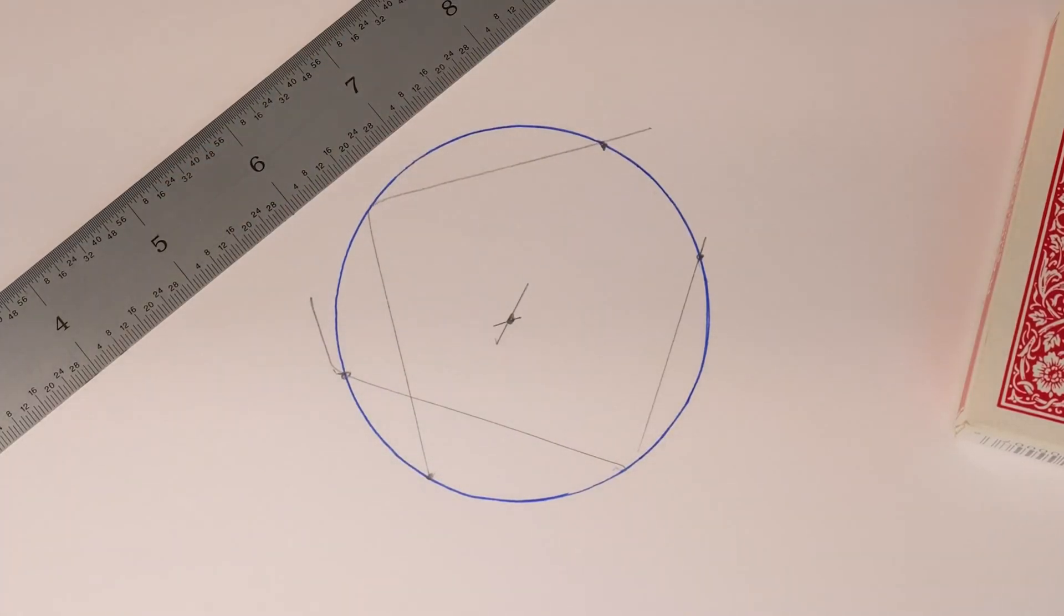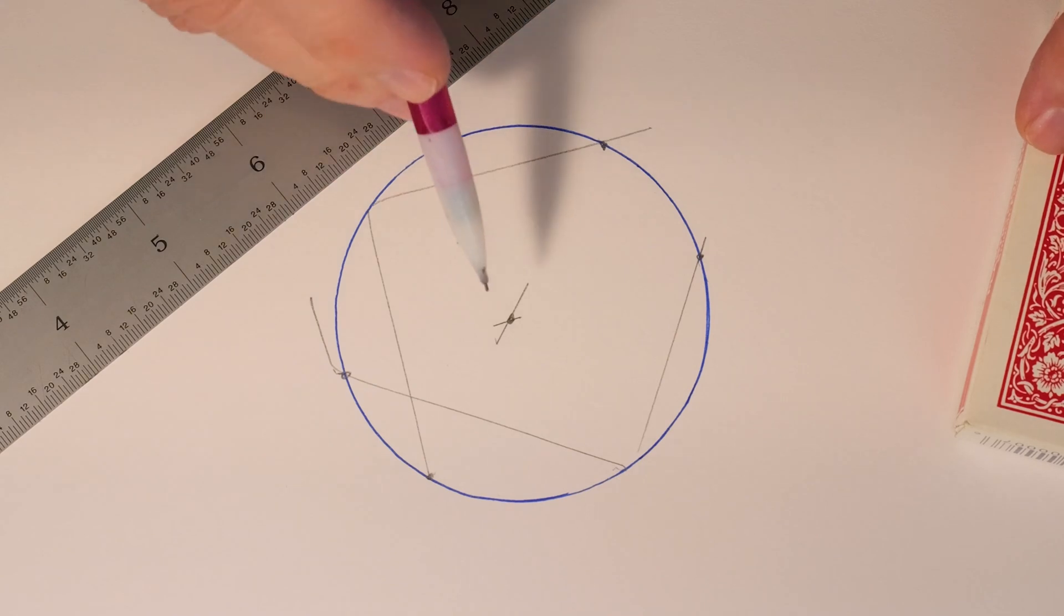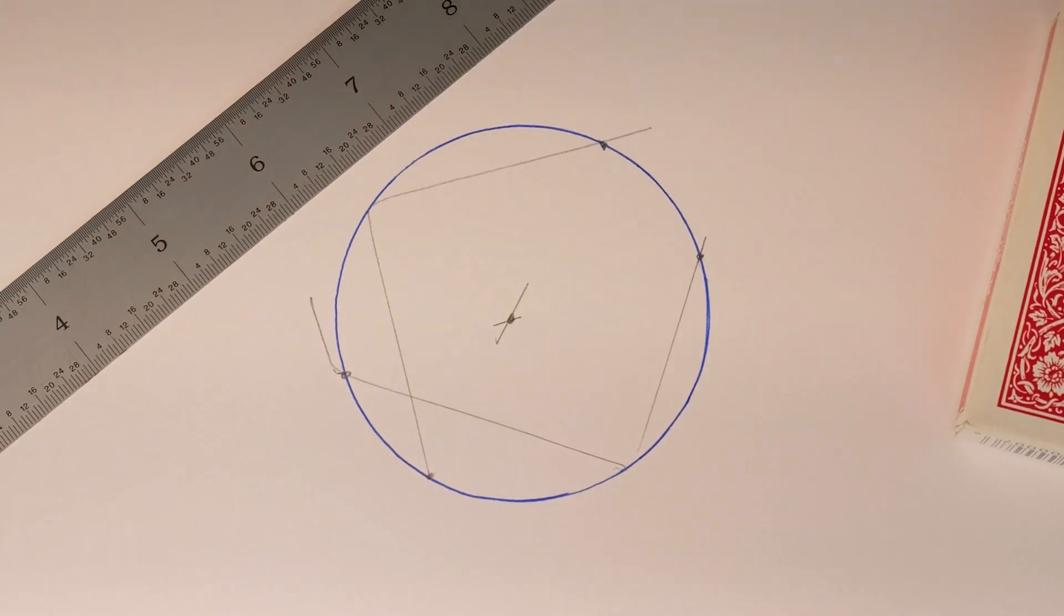So this is a handy technique to use when you're in the shop and you do have access to a square, even a framing square. If you're working on a large project and you need to find the center of a circle, this is an easy technique.